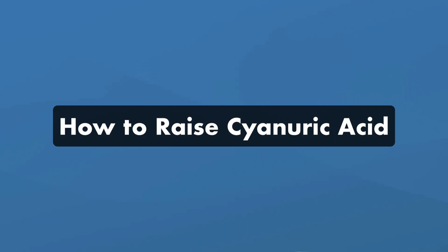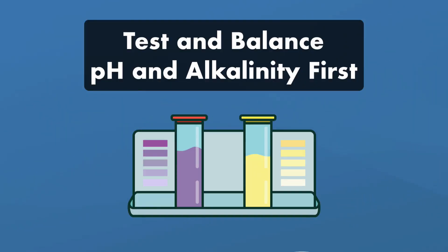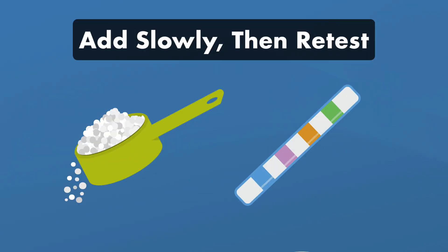Here's how to raise your Cyanuric acid. There are two ways to bring up your CYA: add stabilized chlorine to your water, or add pure Cyanuric acid, also known as chlorine stabilizer. Before you add anything to your pool, test your water, then balance your pH and total alkalinity — this will help any chemicals you add later work more effectively. Keep in mind that it's much harder to lower Cyanuric acid levels than it is to raise them, so don't overdo it. You can always add more stabilized chlorine or CYA later if needed.